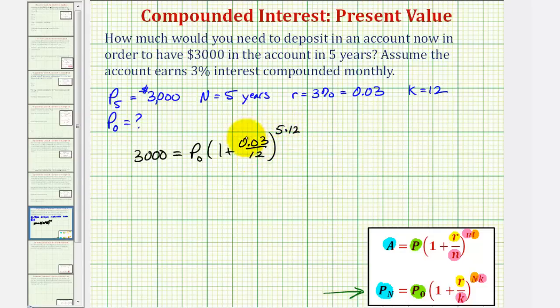Notice how here we're dividing by 12 to get a monthly interest rate. And here we're multiplying the number of years times 12 to get the total number of months. Five times 12 would be 60. So we have 3,000 equals P sub zero times the quantity one plus 0.03 divided by 12 raised to the power of 60.